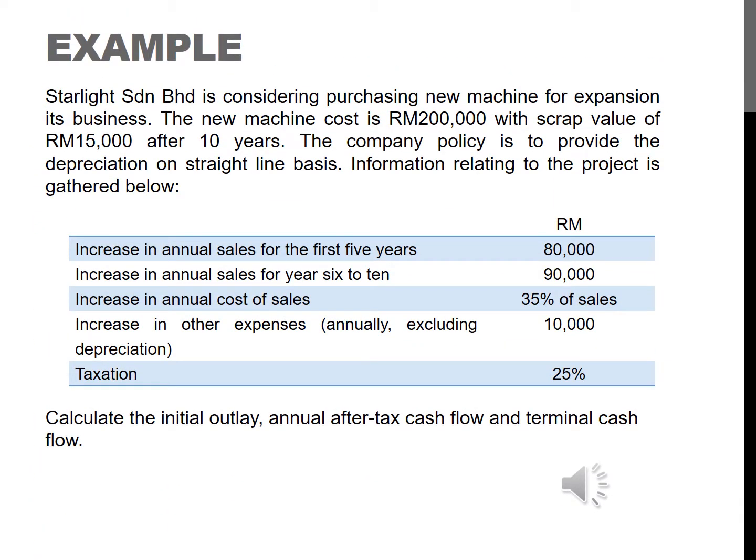It's easier to understand with an example. Starlight SDNBHD is considering purchasing a new machine to expand its business. The new machine costs RM200,000 with a scrap value of RM15,000 after 10 years. The company policy is to provide depreciation on a straight-line basis. Increase in annual sales for the first five years: RM80,000; for years 6 to 10: RM90,000. Increase in annual cost of sales: 35% of sales. Increase in other expenses annually, excluding depreciation: RM10,000. Taxation rate: 25%. From this information, we need to identify the initial outlay, annual cash flow after tax, and the terminal cash flow.